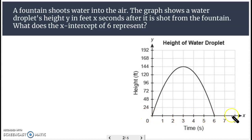They always put time on the x-axis. So it starts down at ground level, shoots up, gets all the way up to 144 after 3 seconds, and then down here at 6. 6 is the x-intercept and what that means is it takes 6 seconds for the water droplet to rise and fall back to the ground.